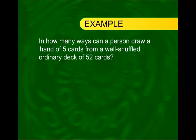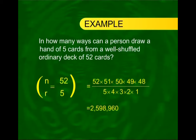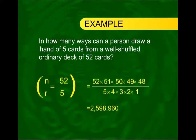To illustrate combinations with another example: in how many ways can a person draw a hand of five cards from a well-shuffled deck of 52 cards? The answer is 52C5 = 52 factorial / (5 factorial × 47 factorial), which equals 2,598,960. So there are 2,598,960 ways of drawing five cards out of 52.